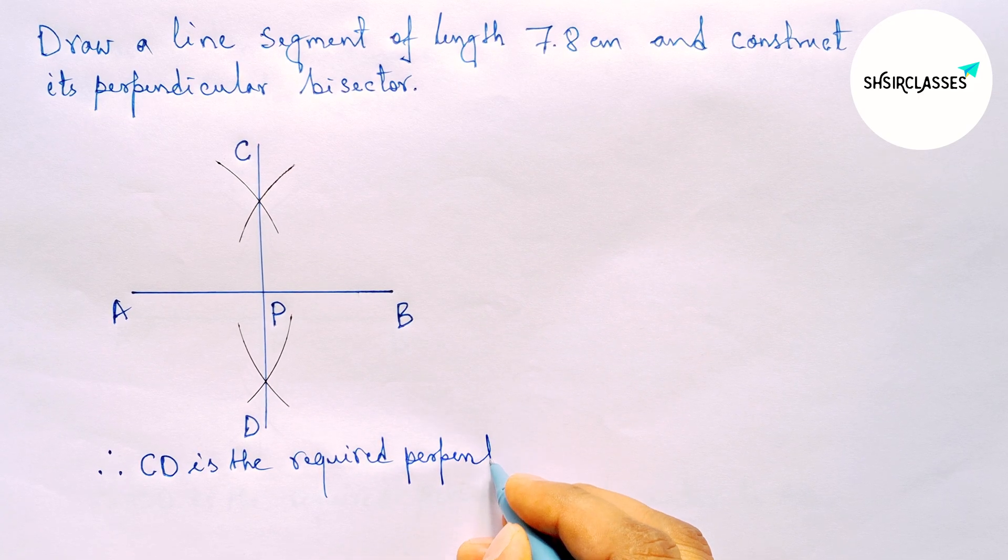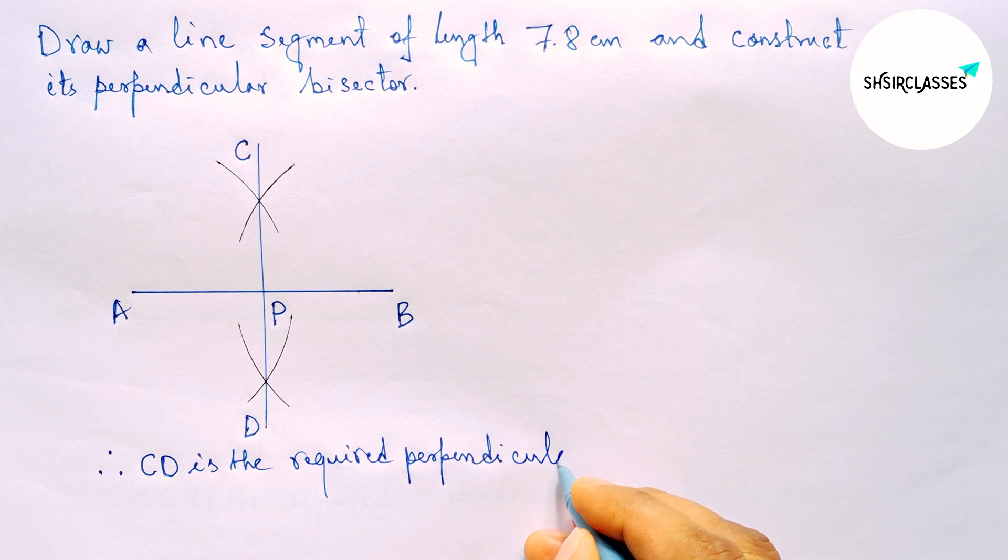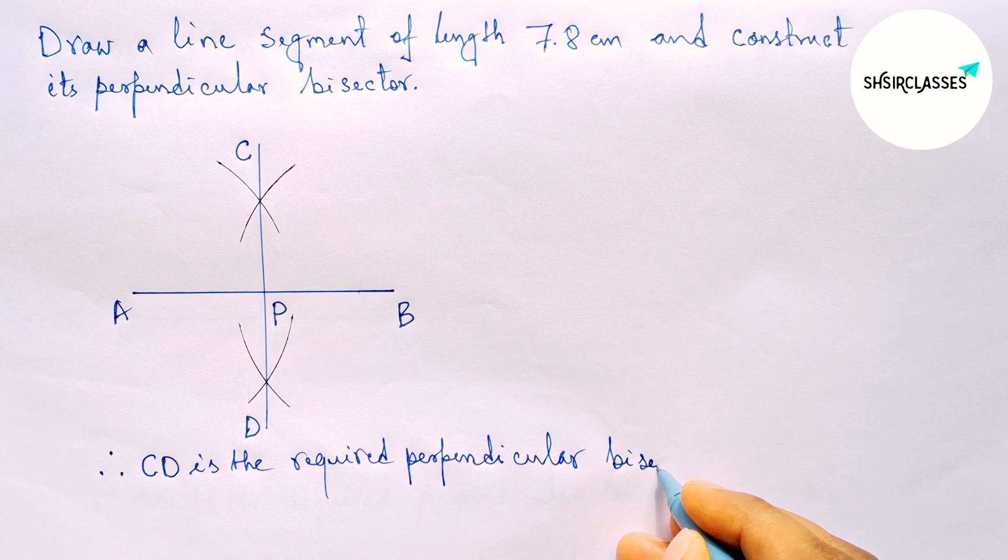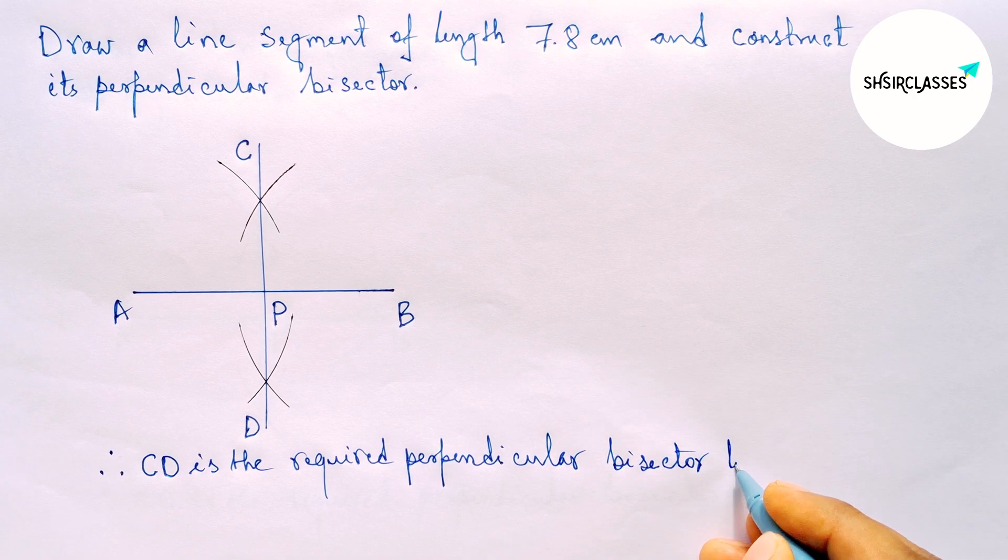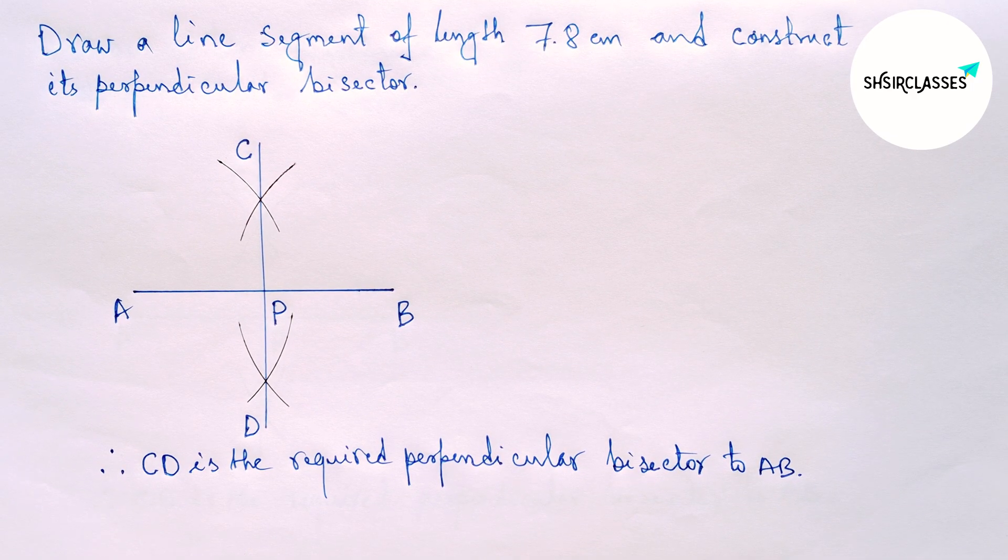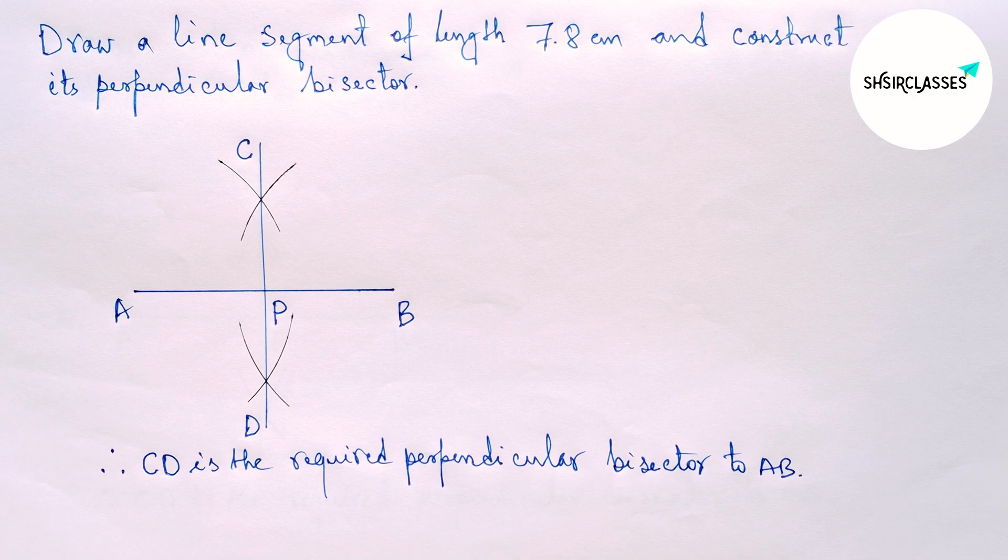And by this way you can construct a perpendicular bisector to a given line. So that's all, thanks for watching, please share it.